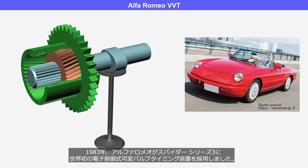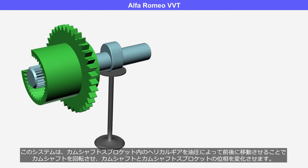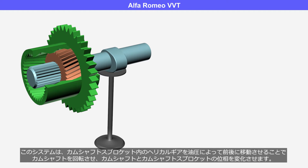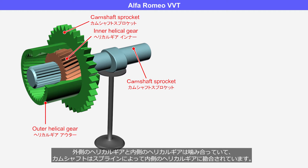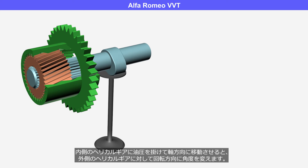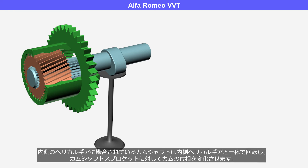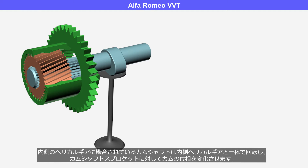In 1983, Alfa Romeo adopted the world's first electronically controlled variable valve timing system for the Spyder Series 3. This system utilizes hydraulic pressure to move the helical gear inside the camshaft sprocket forward and backward, thereby rotating it and altering the phase between the camshaft and camshaft sprocket. The camshaft sprocket is fixed to the outer helical gear, so the crankshaft rotates the outer helical gear. The inner helical gear is meshed to the outer helical gear, and the camshaft is engaged with the inner helical gear via splines. Applying hydraulic pressure to the inner helical gear and moving it axially causes a change in rotational angle relative to the outer helical gear, and the camshaft rotates integrally with it, thereby altering the phase of the camshaft relative to the camshaft sprocket.